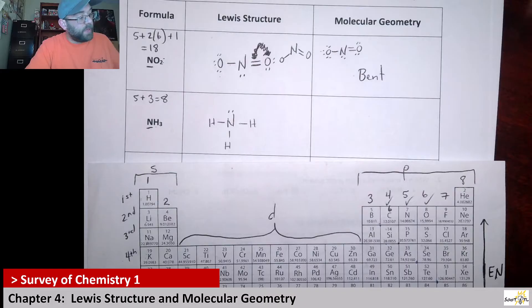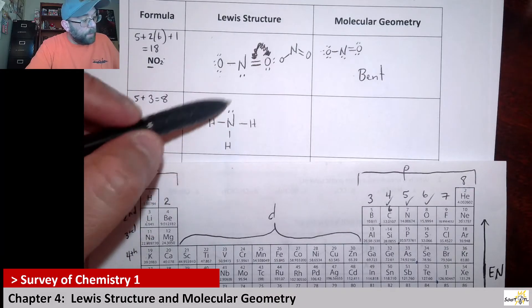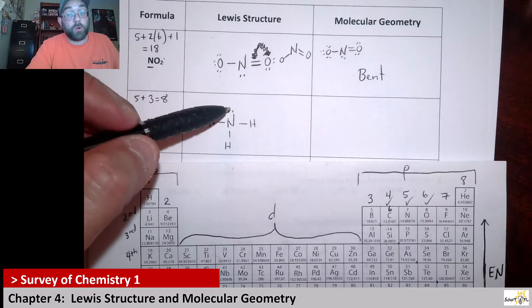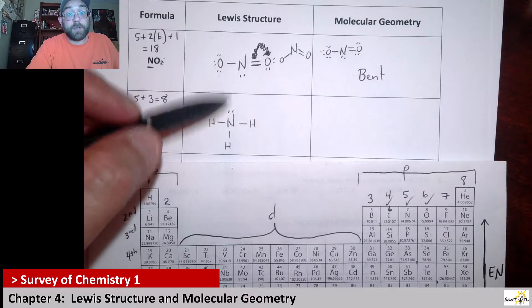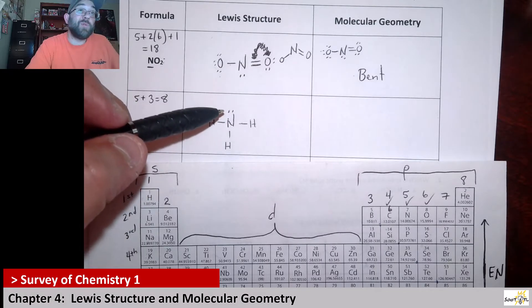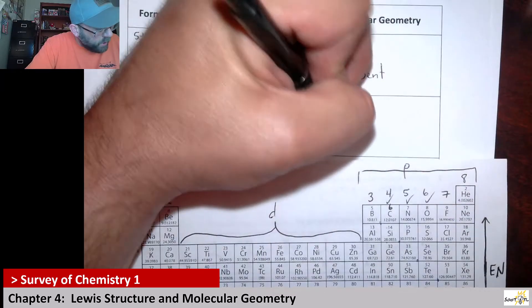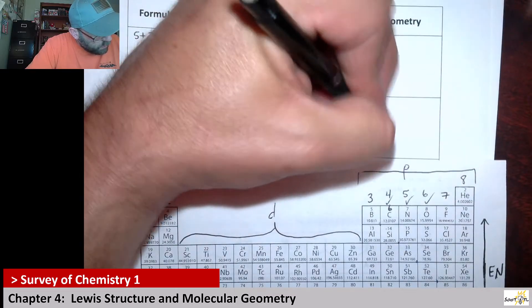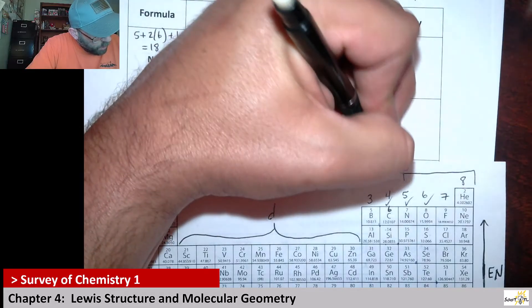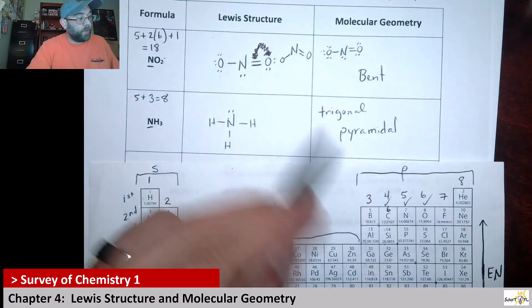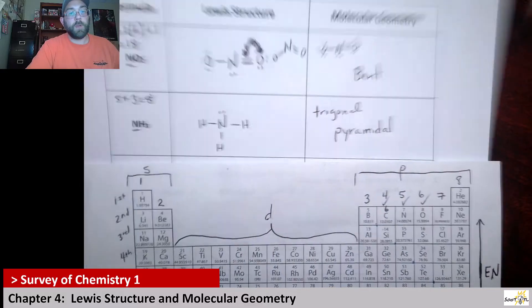With this structure, it does have four domains, but since one of them is not a bond, we can't call this tetrahedral. The next one in line would be trigonal pyramidal.